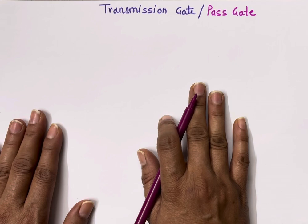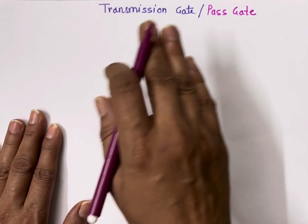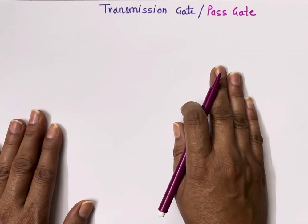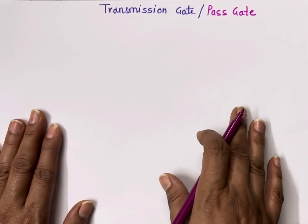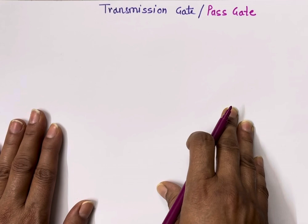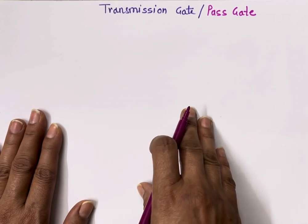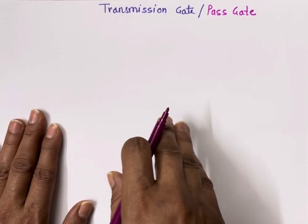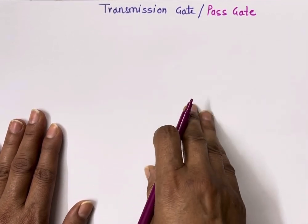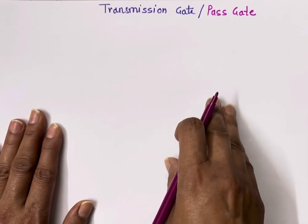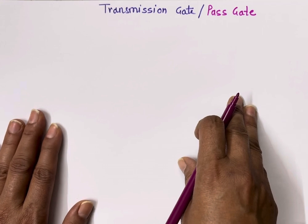The strength of a signal is measured by how closely it approximates an ideal voltage source. For example, if my voltage source is 5 volts and my output voltage is close to 5 volts, I say my signal is strong. In general, the stronger a signal, the more current it can source or sink. Power supplies like VDD are a source of strong one.